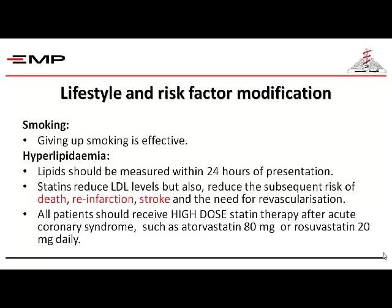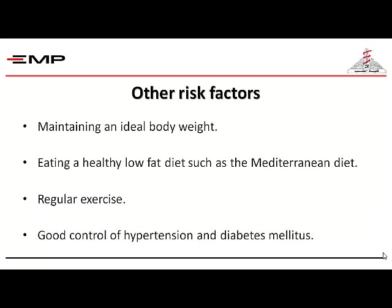These patients should receive very high-dose statins. The high-dose statins are atorvastatin 40 to 80 mg or rosuvastatin 20 mg — not only more powerful in LDL reduction but they also reduce death, re-infarction, and stroke better than lower doses. Other risk factors like maintaining ideal body weight, eating a low-fat healthy diet such as the Mediterranean diet, regular exercise, and very good control of hypertension and diabetes mellitus — which is prevalent in nearly one-third of patients presenting with acute coronary syndrome — are all very important to modify.